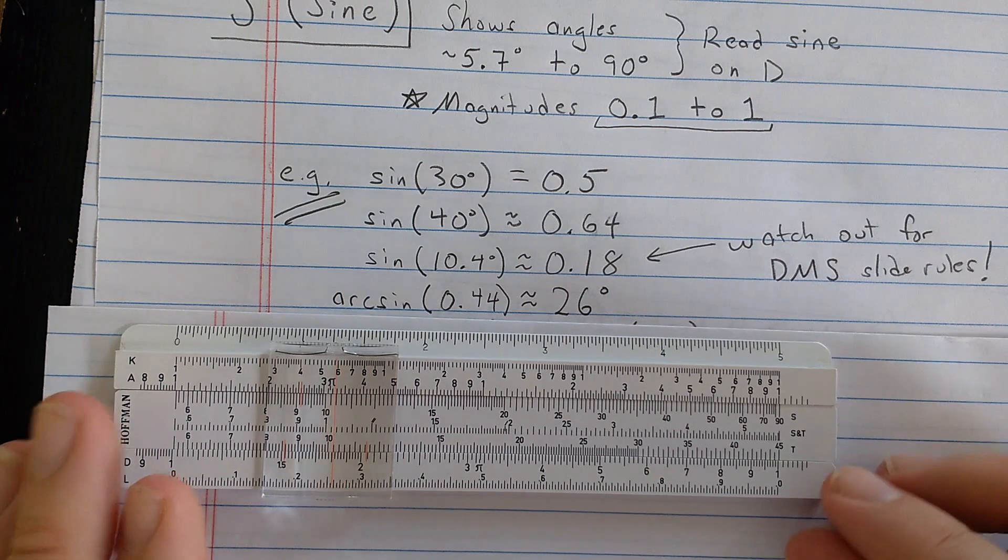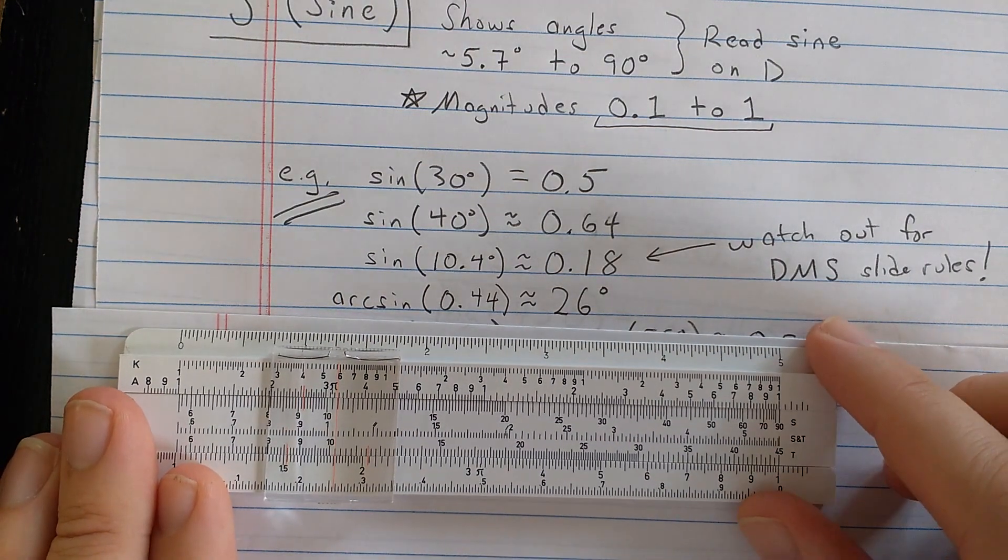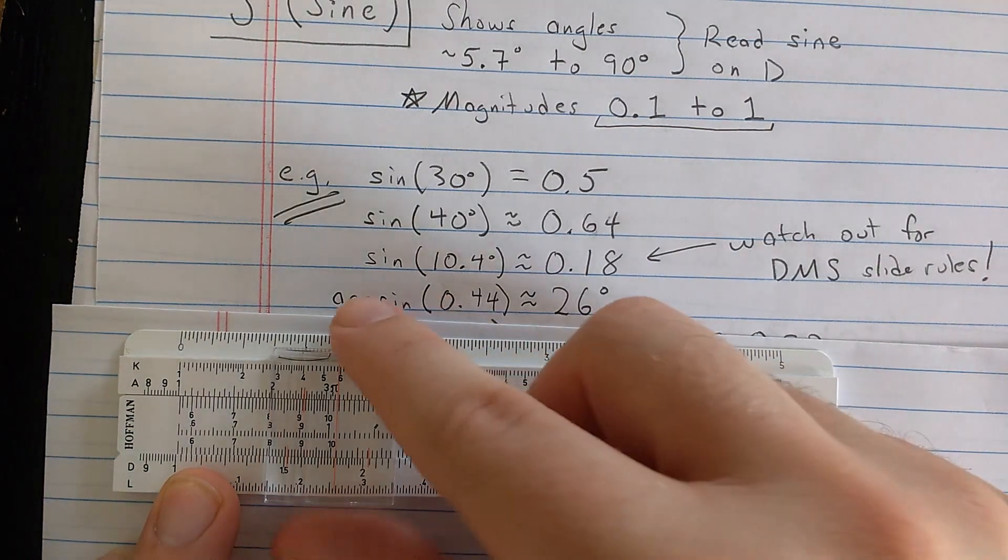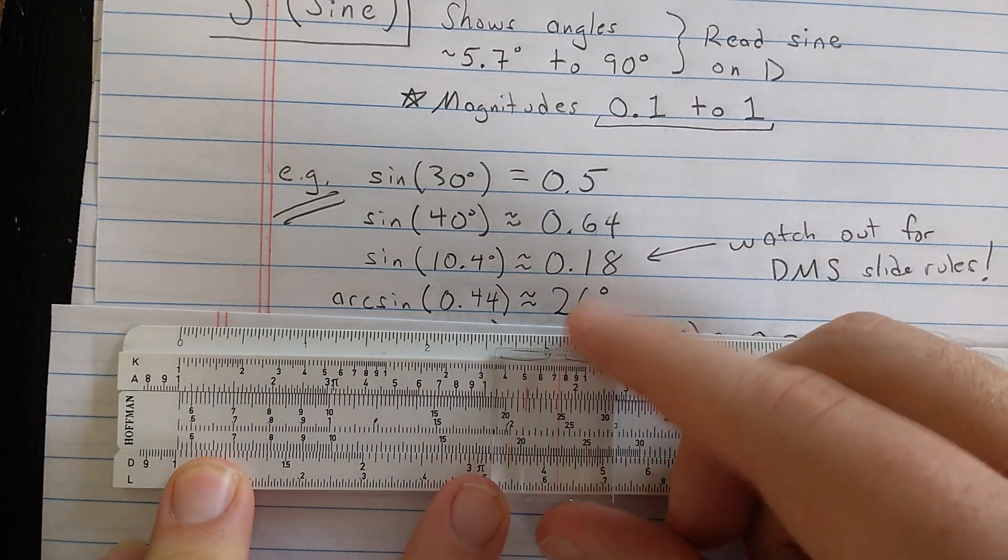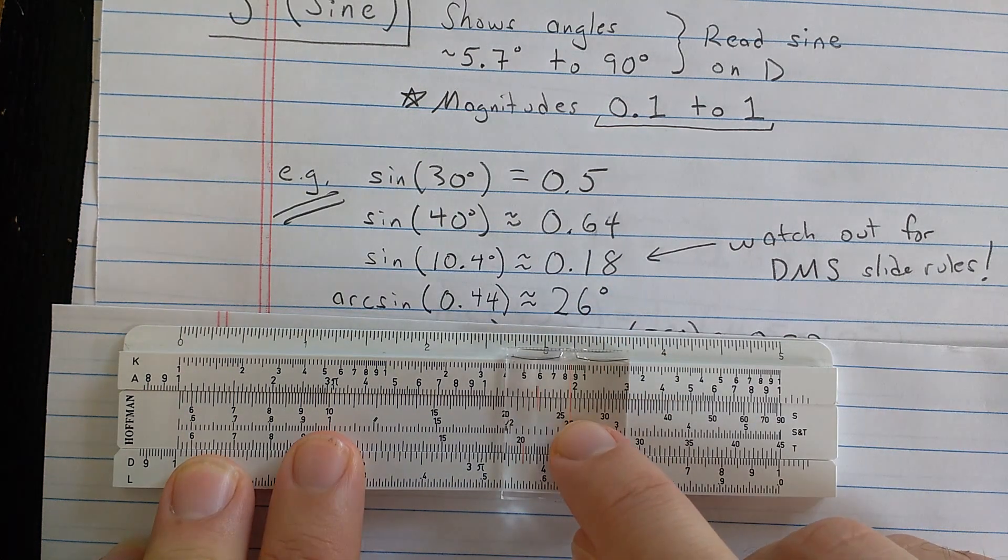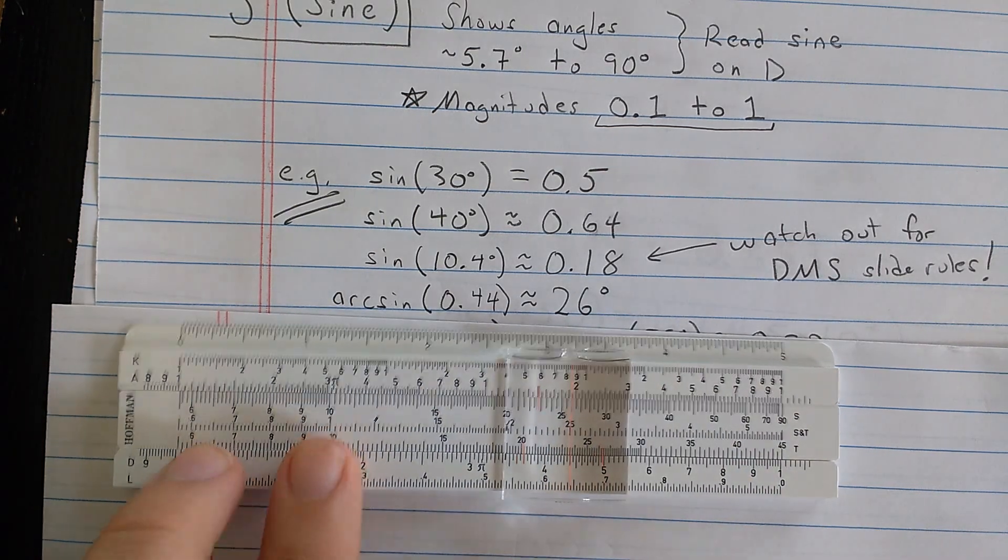Now you could do this all in reverse in order to compute arcsine. So, for example, if you started on the D scale, and you set it to 4.4 here, then you went up to the sine scale, you see that it's reading 26 degrees. So this is computing an arcsine.